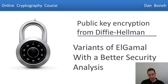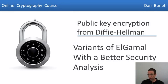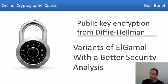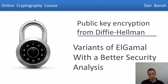In the last segment, we saw that the Elgamal public key encryption system is chosen ciphertext secure under a somewhat strange assumption. In this segment, we're going to look at variants of Elgamal that have a much better chosen ciphertext security analysis. Over the past decade, there's been a ton of research on constructing public key encryptions that are chosen ciphertext secure. I decided to show you a survey of the main results from the last decade, specifically as they apply to the Elgamal system, and at the end of the module I suggest a number of papers for further reading.